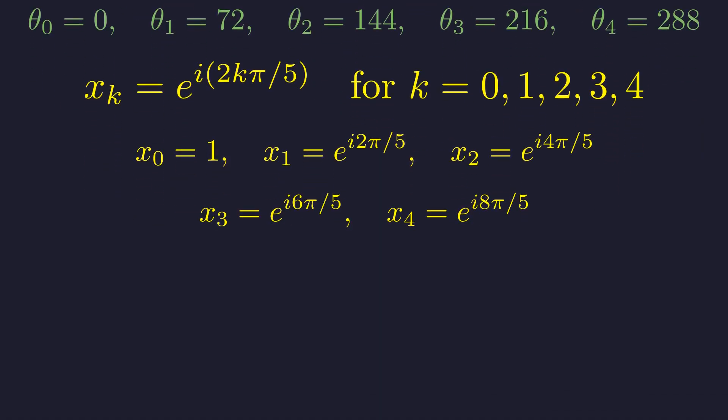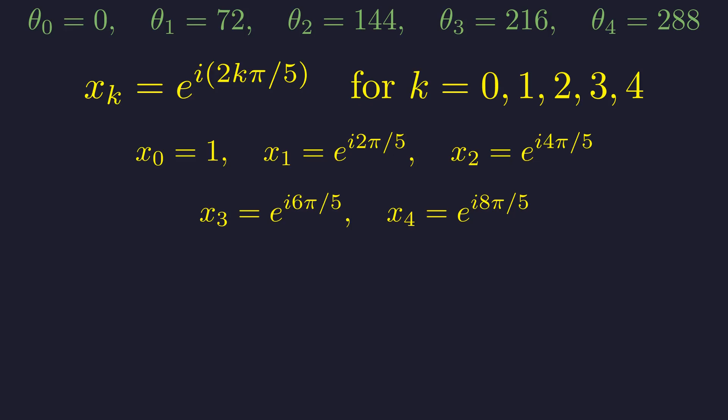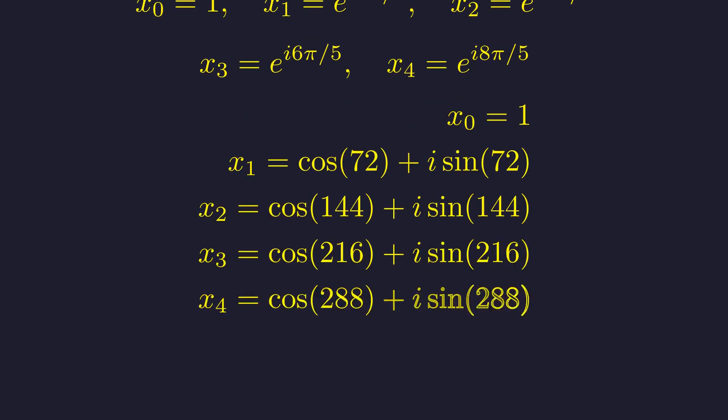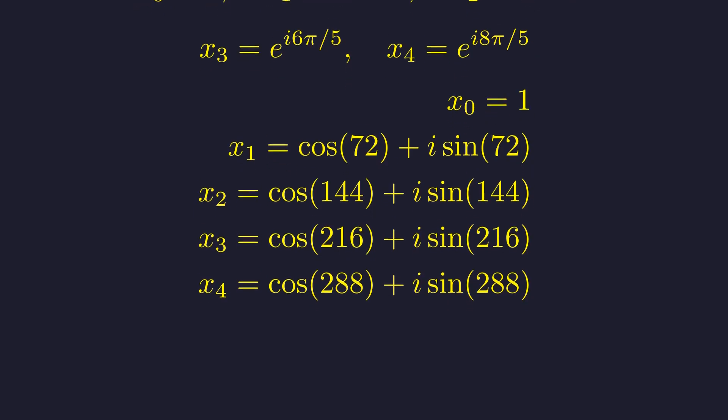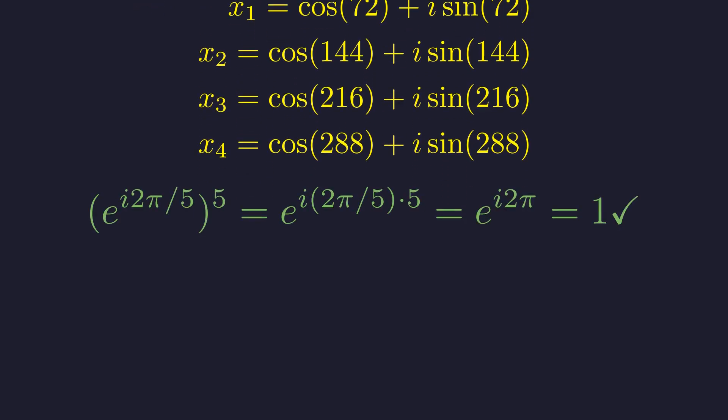Let's write out all five roots explicitly to see the pattern. Converting to degrees in rectangular form, we see each root is separated by exactly 72 degrees around the unit circle. Now comes a moment of truth. Let's verify one of these solutions by plugging it back into our original equation. Perfect! The second root, when raised to the fifth power, gives us e to the i 2 pi, which equals 1. Our algebra is correct.